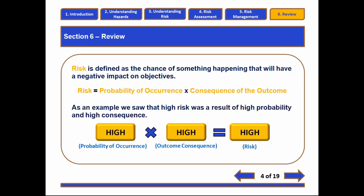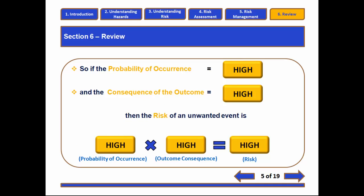Once we've identified these hazards and we're looking at different ways to mitigate against them, we're going to consider the risk, where we find the risk as the chance of something happening that will have a negative impact on objectives. Usually, we're going to try to quantify this risk as a product of probability of occurrence and the consequence of the outcome. For example, if we have something that's a high probability of occurring and has a high consequence, that would be a high risk hazard — high probability, high consequence, high risk.